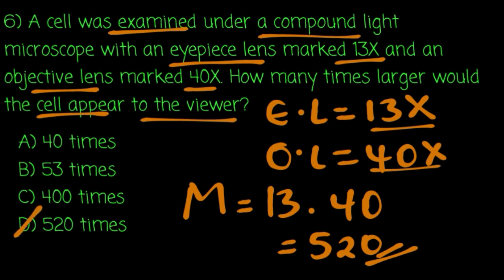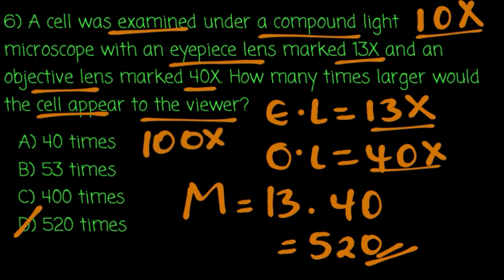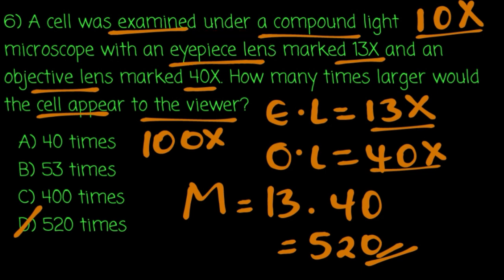To find total magnification, we multiply the eyepiece magnification by the objective magnification. The eyepiece is 13x and the objective is 40x — but some examples use other values like 10x eyepiece with 5x or 40x objectives to get totals like 50x or higher.